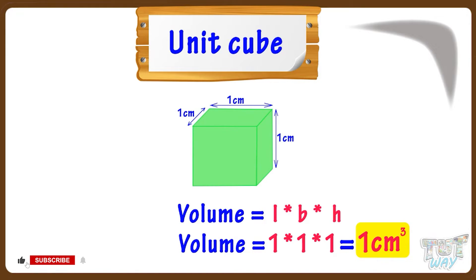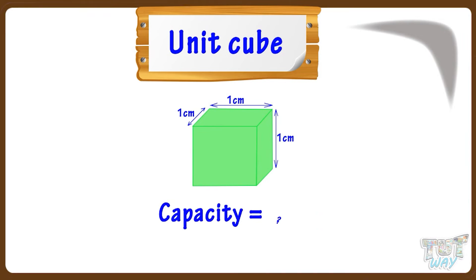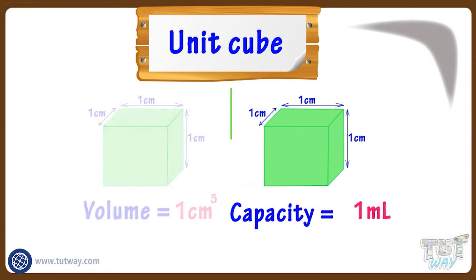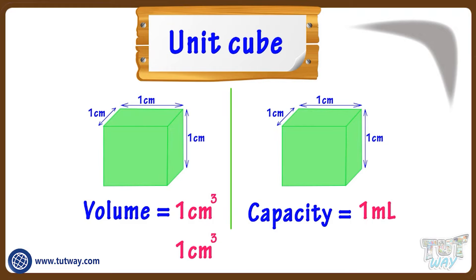Now let's see what is the capacity of the same cube. A unit cube can hold one milliliter of liquid. So capacity of unit cube is one milliliter. One centimeter cube equals one milliliter.